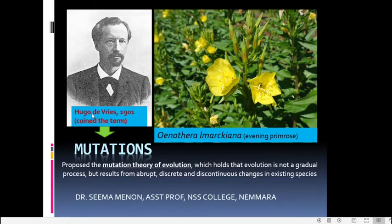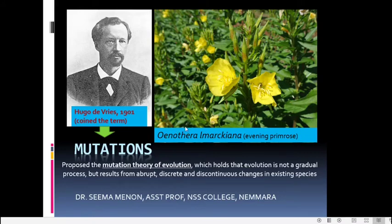The term 'mutations' was coined by Hugo de Vries in 1901 based on his studies on the plant Evening Primrose, or Oenothera lamarckiana. In his studies he could observe different varieties of the plant which differed from the normal wild variety — a taller variety called Oenothera gigas, a dwarf variety Oenothera nanella, and Oenothera lata which is a broad-leafed variety. De Vries believed these varieties emerged by sudden changes in the wild variety, and thereafter he proposed the mutation theory of evolution, which states that evolution results from abrupt, discrete, and discontinuous changes in existing species.